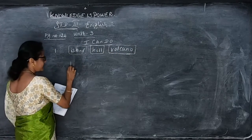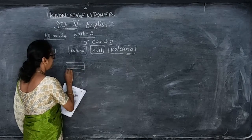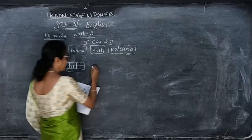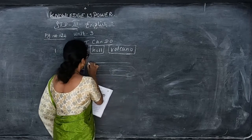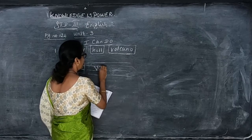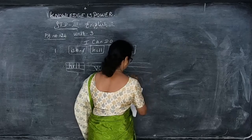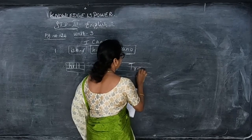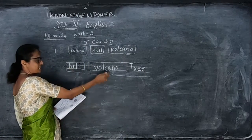The first picture is a hill — write H-I-L-L, hill. The second picture is volcano — write V-O-L-C-A-N-O, volcano. The third picture is tree — write T-R-E-E, tree. So first picture is hill, second is volcano, and third is tree.